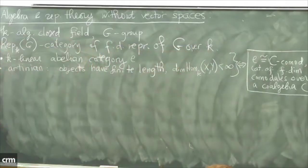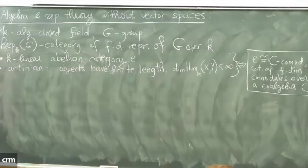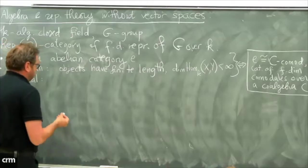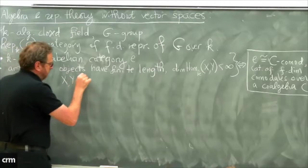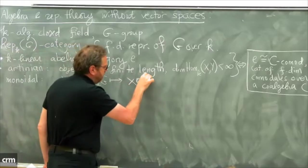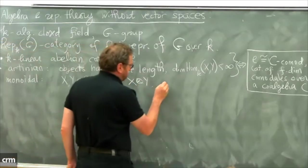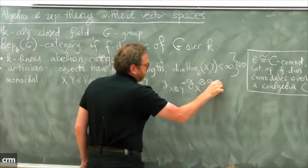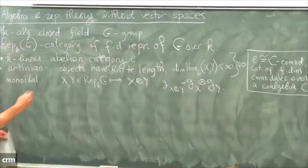Those are the additive structures. What I'll be more interested in is the multiplicative structure. This category is monoidal, and this comes from the fact that we have a notion of tensor product of representations. If you have x and y in Rep_k(g), we can form their tensor product x ⊗ y, which is the usual tensor product of vector spaces, and an element of the group acts on x ⊗ y simply as g acting on x tensored with g acting on y.